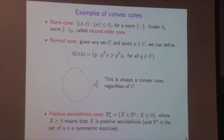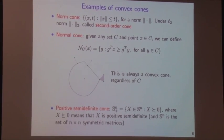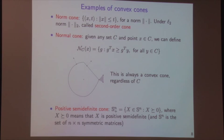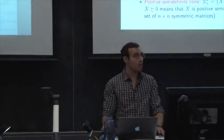Another example: the fantope. This is the set F_K of all symmetric matrices Z such that Z ⪰ 0, I − Z ⪰ 0, and trace(Z) = K. Equivalently, all eigenvalues of Z lie between 0 and 1, and the sum of eigenvalues equals K (since trace equals the sum of eigenvalues). We'll see this relates nicely to principal components analysis next time.